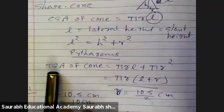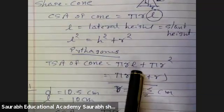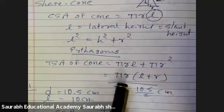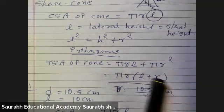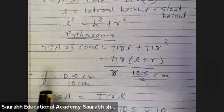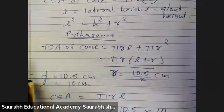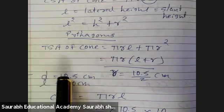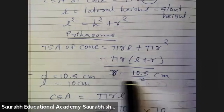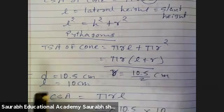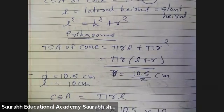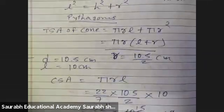Total surface area of a cone equals π R L plus π R squared. Take out common π R, it becomes π R into bracket L plus R. Now, diameter D equals 10.5 centimeter, so radius equals 10.5 by 2. Slant height L is 10 centimeter.